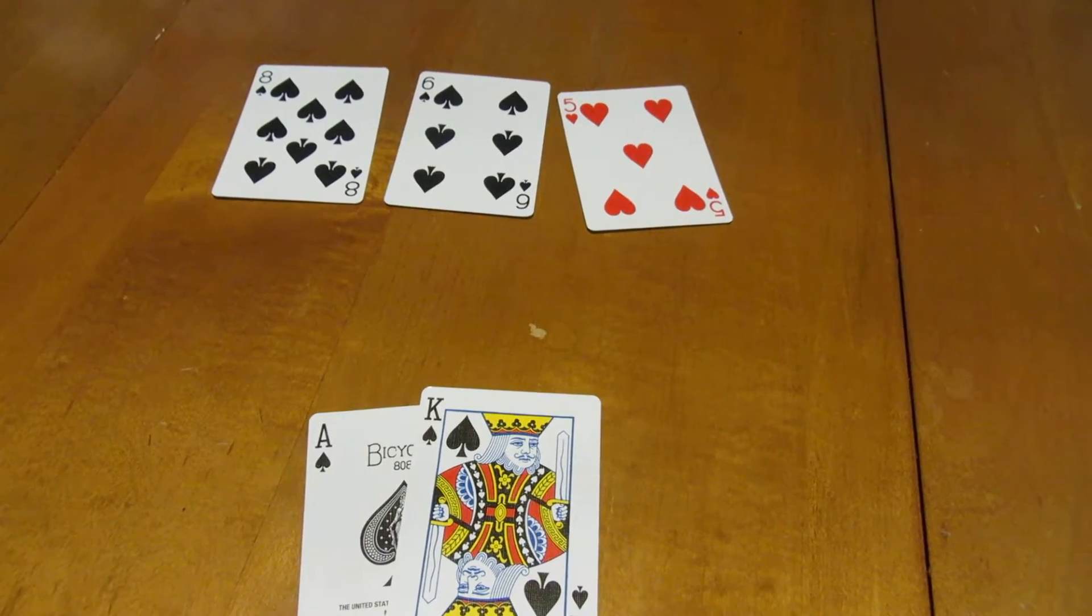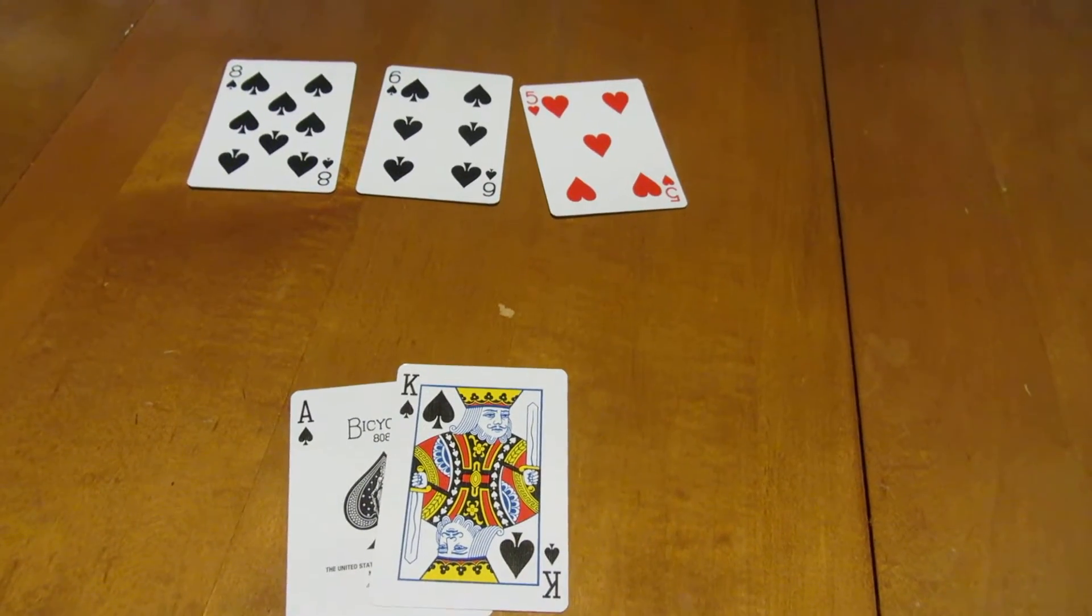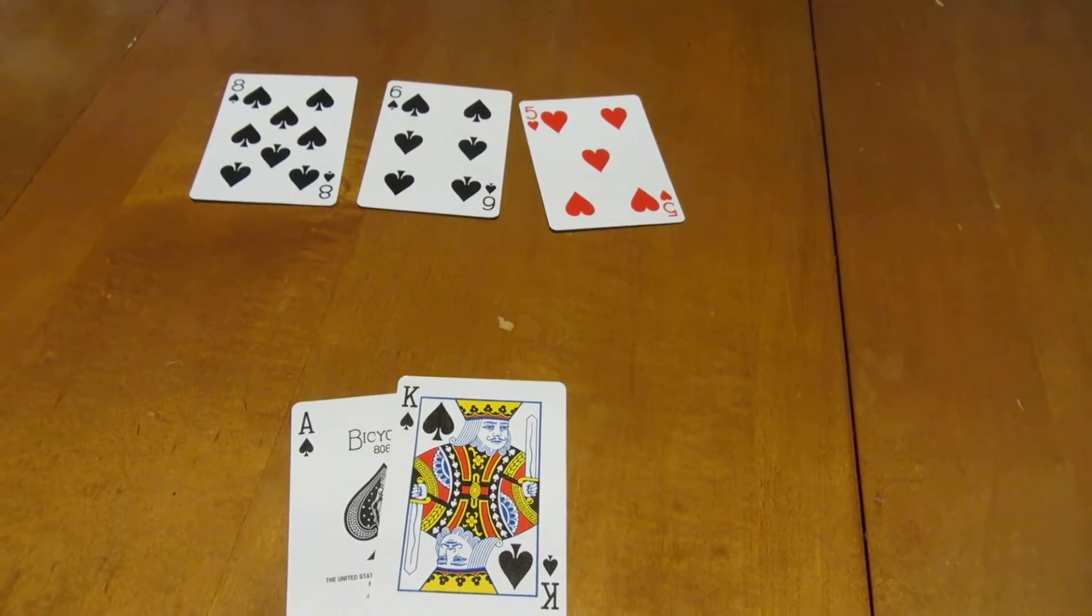But most likely the way you win this hand is by hitting your flush. So one more Spade gets you a flush. We have 4 right now, and we need a 5th. So we have 2 more cards to hit that flush. Let's see what the probabilities are and how they change.